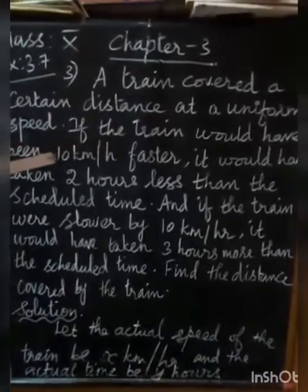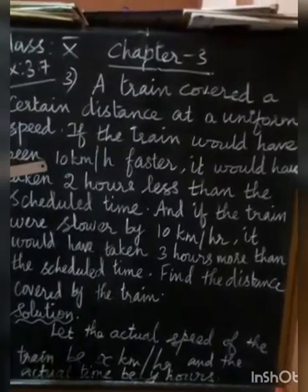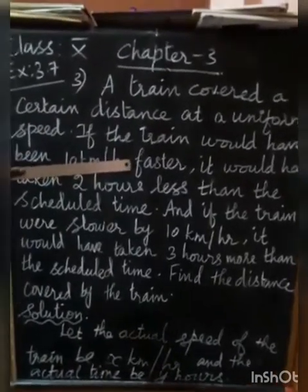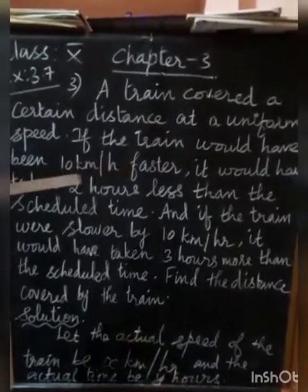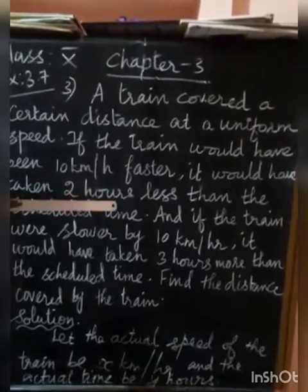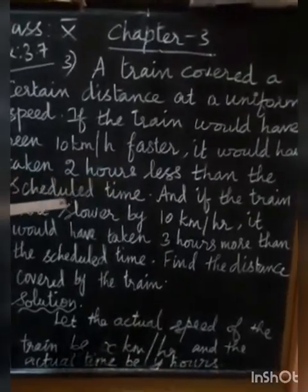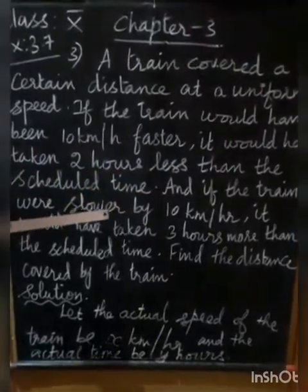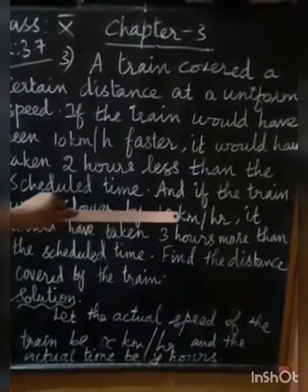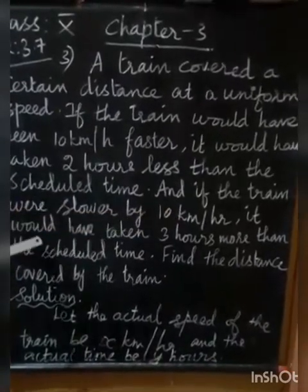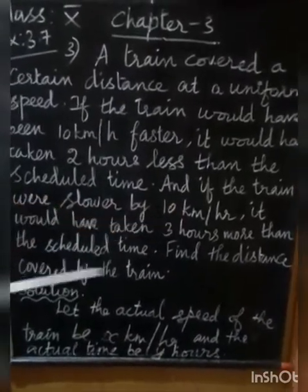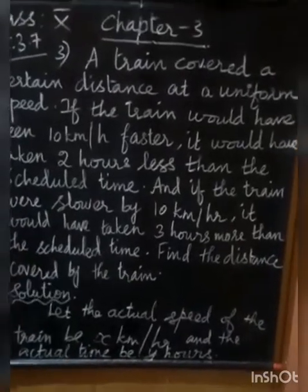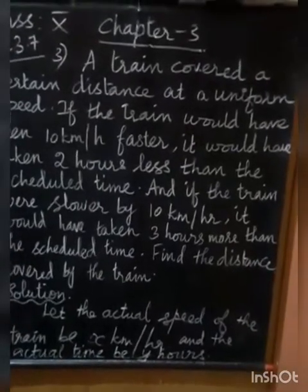If the train would have been 10 km per hour faster, it would have taken 2 hours less than the scheduled time. And if the train were slower by 10 km per hour, it would have taken 3 hours more than the scheduled time. Find the distance covered by the train.